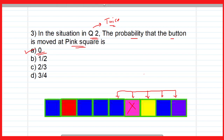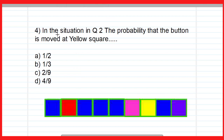Now the next question: in the situation of question 2, the button is placed at the yellow square and the die is thrown twice. What is the probability that the button is moved back to the yellow square? For the button to return to yellow, either it moves right in the first throw and left in the second, or it moves left in the first throw and right in the second.